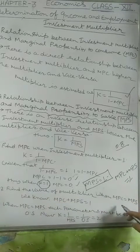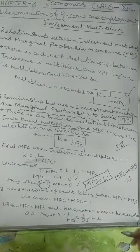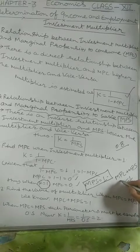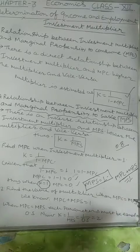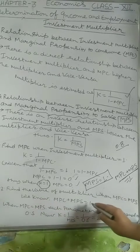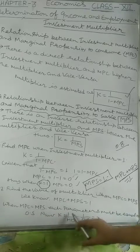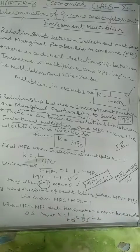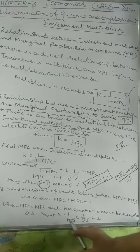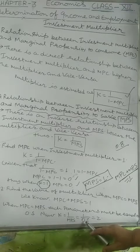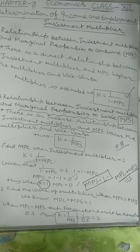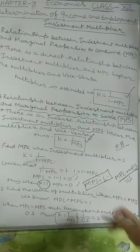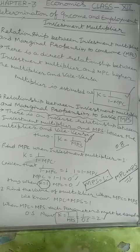Example 2: Find the value of the multiplier when MPC equals MPS. If we assume both are equal to each other, since MPC + MPS = 1, and both are equal, each must be 0.5. Using the formula K = 1 / MPS = 1 / 0.5 = 2. This is the relationship of marginal propensity to save with the multiplier (K = 1/MPS). If MPS is 0.5, the multiplier value will be 2.